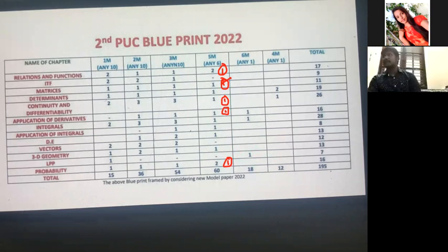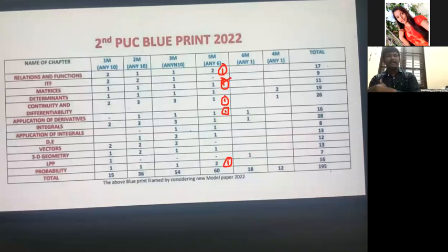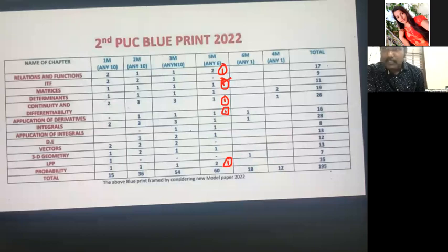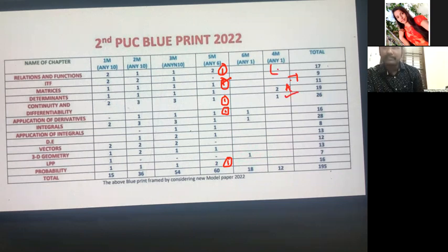After finishing five-mark questions, go to the six-mark and four-mark questions. For the four-mark section, generally choose LPP. Parallelly, for the six-mark question, they will give either Continuity, Find the Inverse, or Find the Determinants — one of those three will come. For Application of Derivatives, I already discussed this in yesterday's and before-yesterday's videos. With LPP and that parallel question, you can do both.